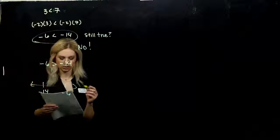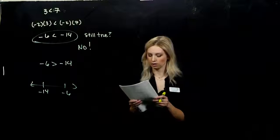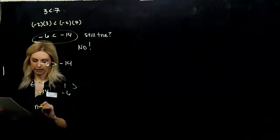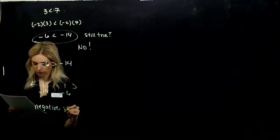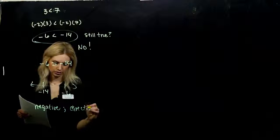So what happens when we multiply and divide both sides of an inequality by a negative number? By a negative, we need to change the direction. Flip the sign. The direction of the inequality changes.